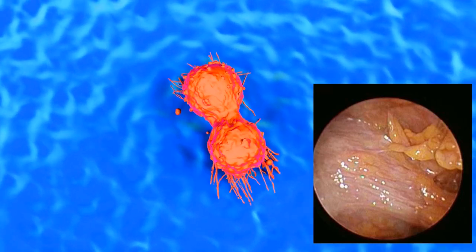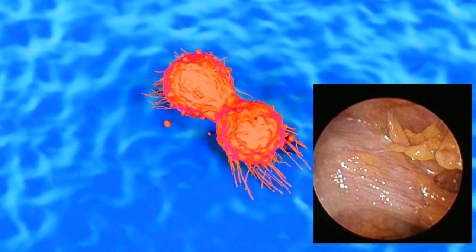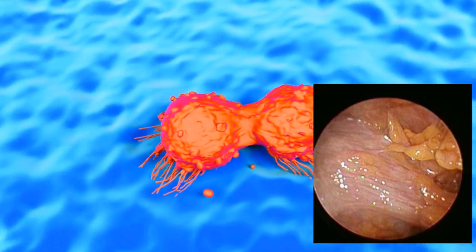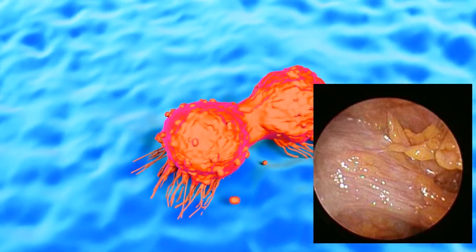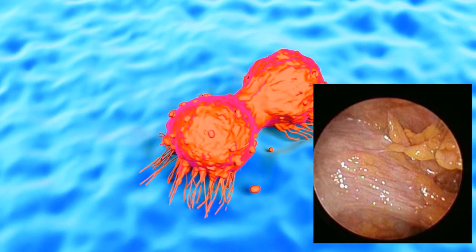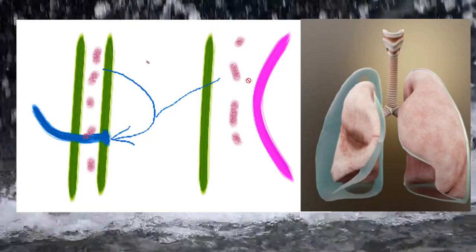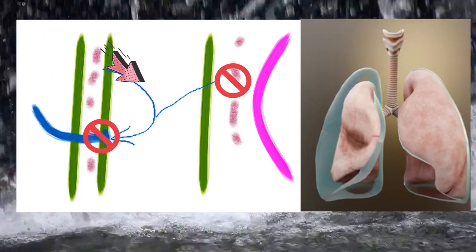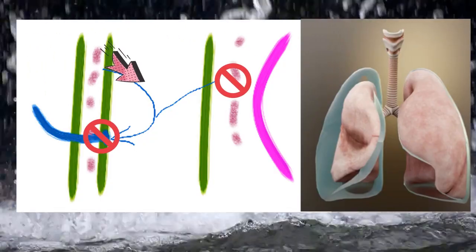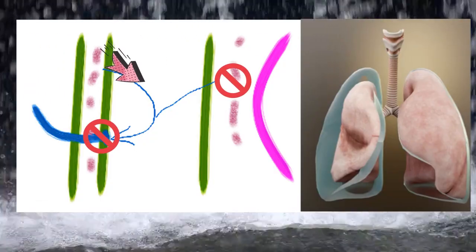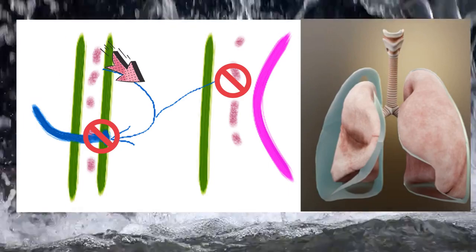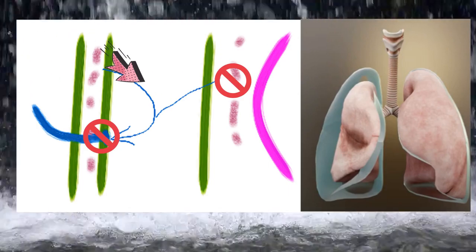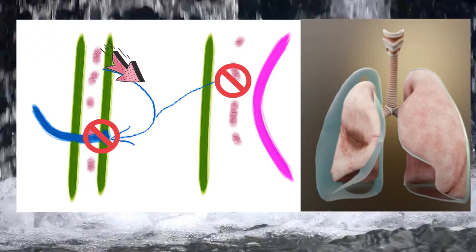When cancer cells spread to the pleura, or the outer membrane of the lungs, it will block up the lymphatic drainage spots, thus preventing the exit of the fluid. These cells can also produce certain substances to increase the creation of the fluid.